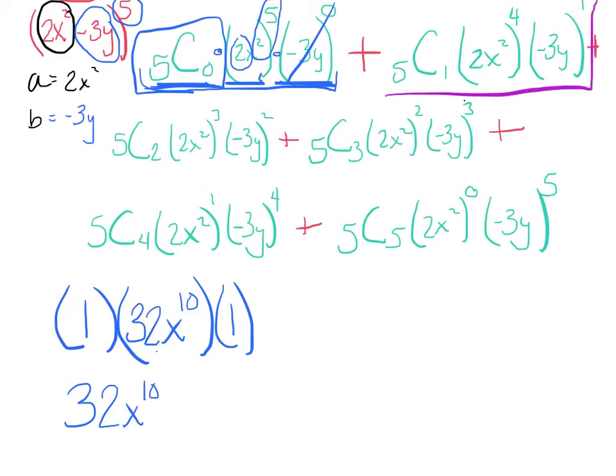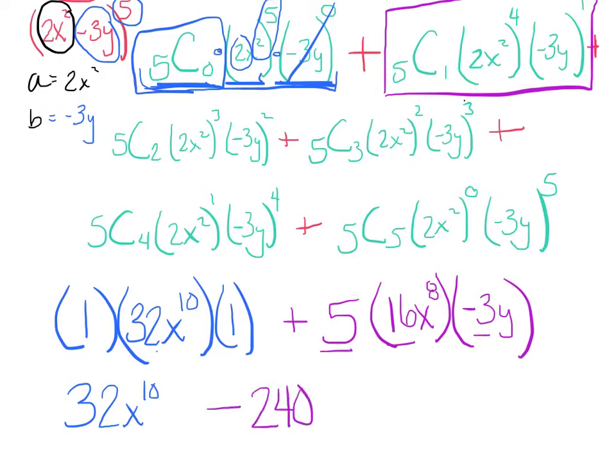Now I'm going to do the same thing with my next term. 5 choose 1, throwing it in my calculator. 5, 2x squared to the 4th. 2 times 2 times 2 times 2 is 16. 5, 16, x to the 8th. And negative 3y to the 1st is just negative 3y. Carefully multiply those terms. 5, 16, and negative 3 gets me a negative 240. x to the 8th, y.